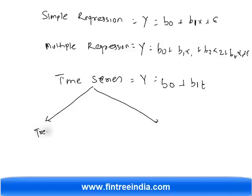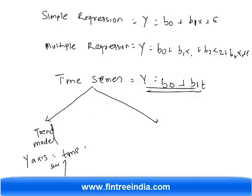Time series will have two types of models. The first type is called a trend model. In a trend model, your x-axis is simply time. For example, if you're looking at sales data for years 2001, 2002, 2003, 2004, and you build an equation, that is a simple trend model: y = b0 + b1*t.